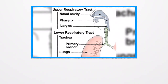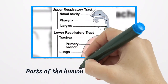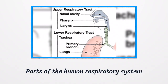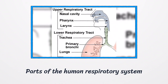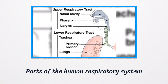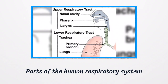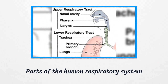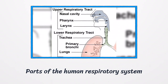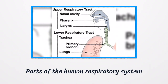Our human respiratory system is divided into two parts: upper and lower. The upper respiratory tract includes nostrils or nasal cavity, pharynx and larynx, while the lower respiratory tract includes trachea, bronchi and bronchioles inside our lungs.